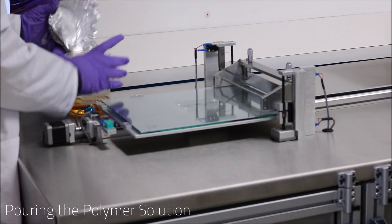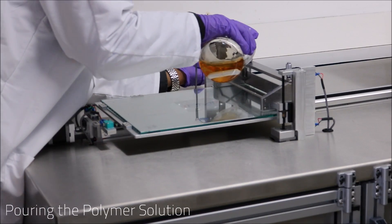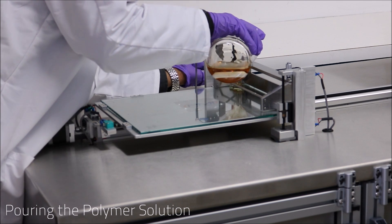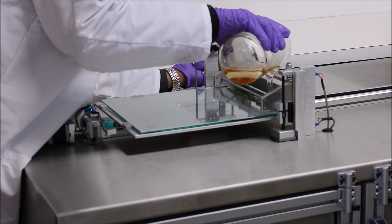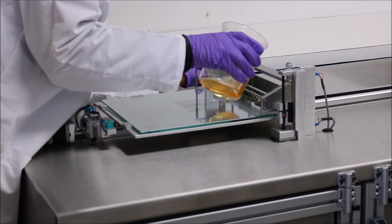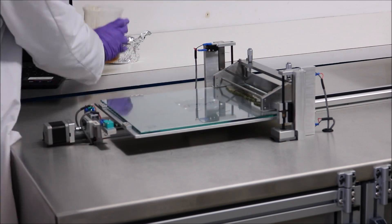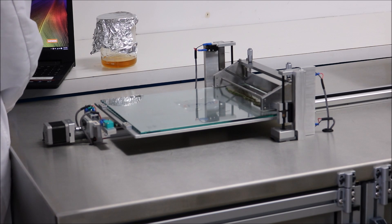Now that we have the thickness set, we can now begin pouring the polymer solution onto the membrane casting plate. For the best results, it is important to pour the polymer solution as close to the doctor's blade as possible while maintaining an even line.